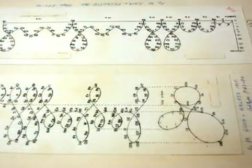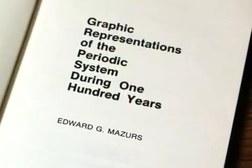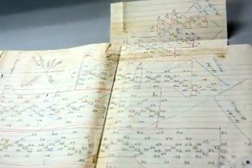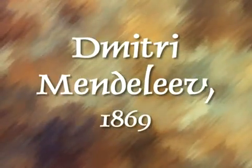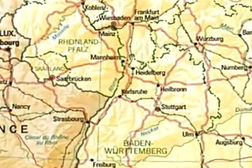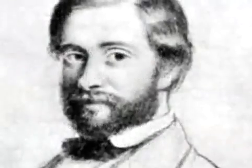Throughout this episode, we will also use the diagrams and notes of Edward G. Mazurs, who wrote a definitive book in 1957 and 1974 about ways of classifying various periodic tables, titled Graphic Representations of the Periodic System During 100 Years. These notes are archived at the Chemical Heritage Foundation in Philadelphia, Pennsylvania. Dmitri Mendeleev was a 26-year-old postdoctoral fellow at Robert Bunsen's laboratory in Heidelberg, Germany, when he attended the Karlsruhe Conference in 1860 and heard about the revised atomic weights of Stanislaw Canizzaro.